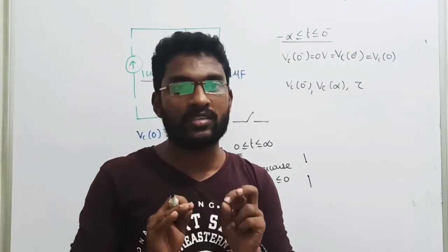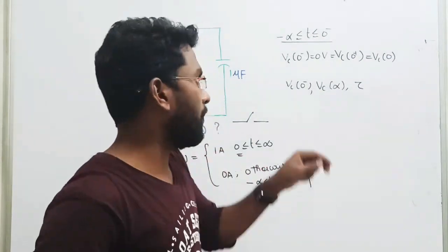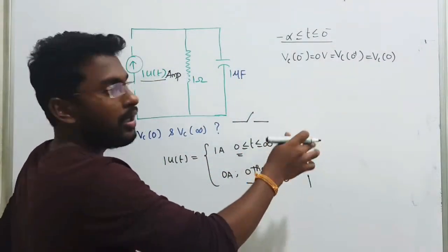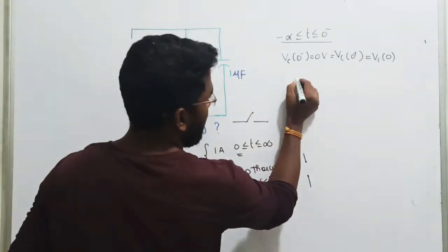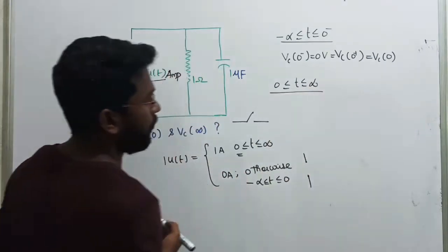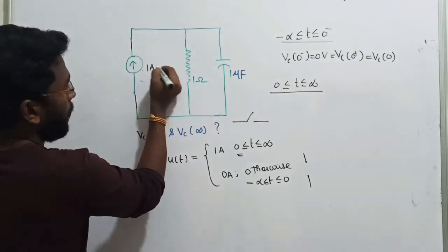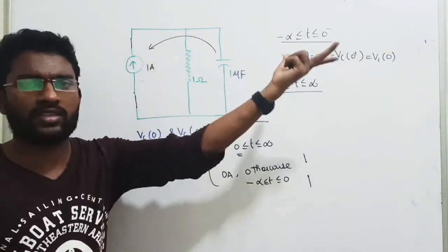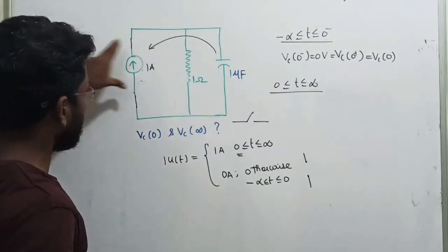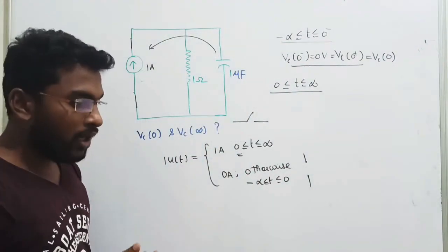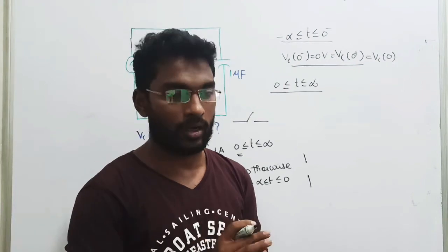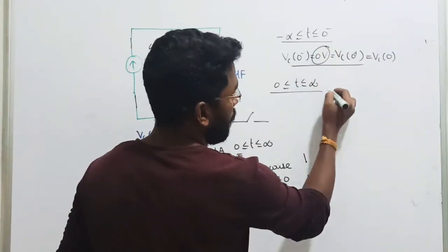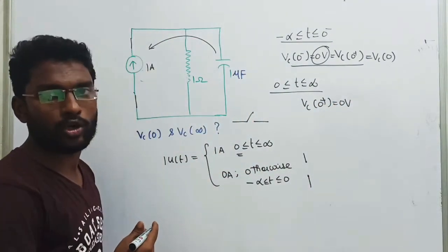So our initial voltage Vc(0-) is 0 voltage. We know Vc(0-) = Vc(0+) — that is the linearity condition. Your inductor and capacitor are not accepting sudden changes. The capacitor does not accept sudden voltage changes. So the voltage at t equal to 0 plus is also going to be 0. That's why I told you Vc(0+) is also going to be 0 voltage.